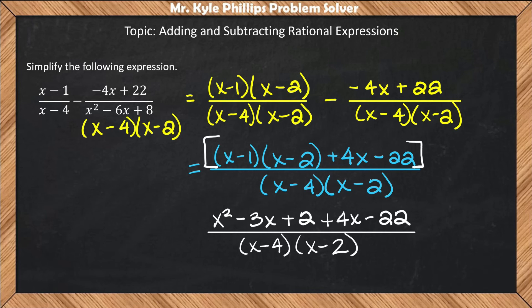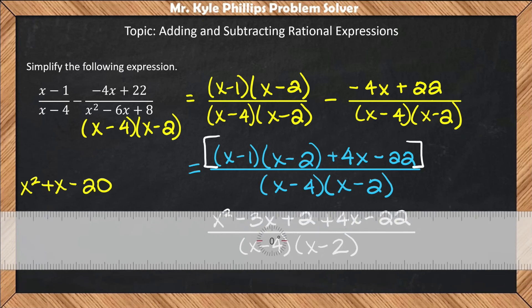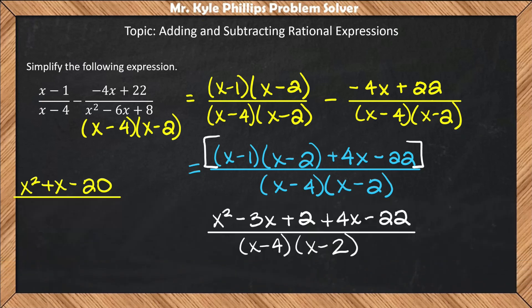Now, when we combine like terms, we'll write this over here on the left. We're going to have x squared, negative 3x plus 4x, so that's just going to give us x, and then positive 2 and negative 22 is going to give us negative 20. So this will now all be over x minus 4, x minus 2.